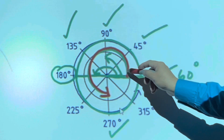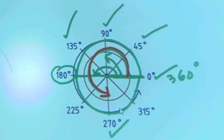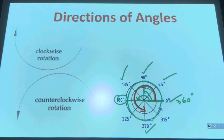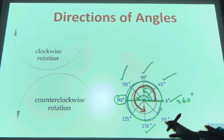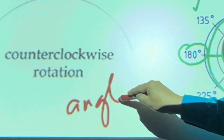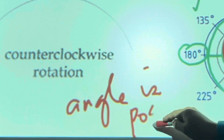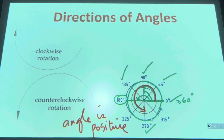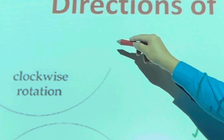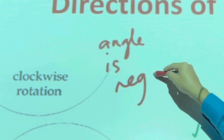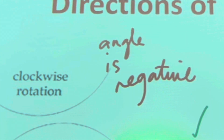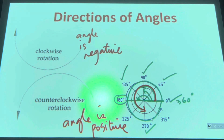It's very important that you draw arrows to determine the direction of the angle. If an angle is rotating in a counterclockwise direction, the angle is positive. If an angle is negative, it should be in a clockwise rotation. Clockwise means following the direction of the clock.